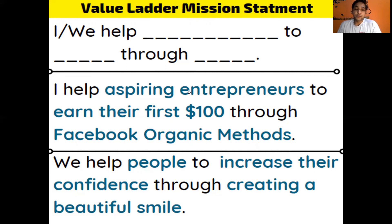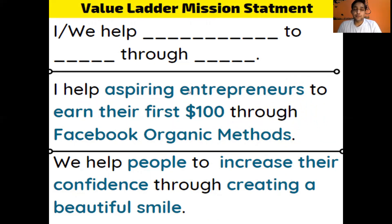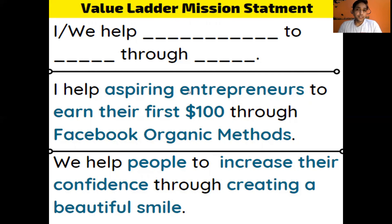For example, if I talk about myself: 'I help' — who is your dream audience? My dream customers are aspiring entrepreneurs who are completely new to the online world. So I say: 'I help aspiring entrepreneurs to earn their first hundred dollars.' That is the goal my clients will achieve. 'Through' — what is the vehicle or source? For me it is the Facebook organic method. So my mission statement is: 'I help aspiring entrepreneurs to earn their first hundred dollars through Facebook organic methods.'